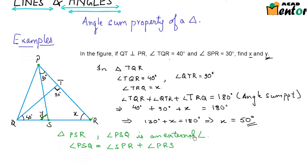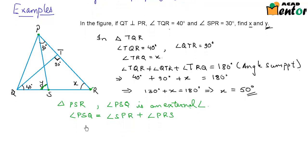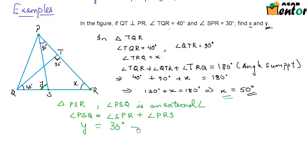Now I know that angle PSQ is nothing but y, and I can write angle SPR as 30 degrees. I also know the value of angle PRS — it is nothing but angle TRQ, which is x, equal to 50 degrees. So the value of y would be 30 degrees plus 50 degrees, that is 80 degrees.